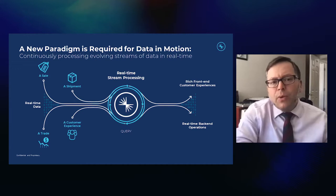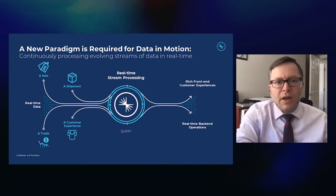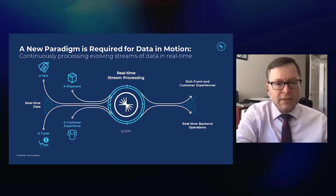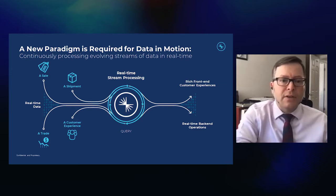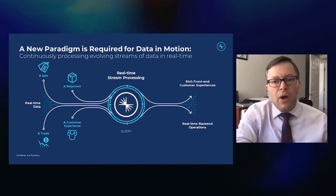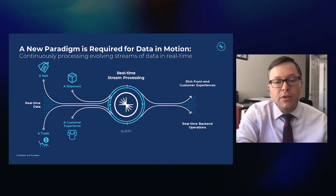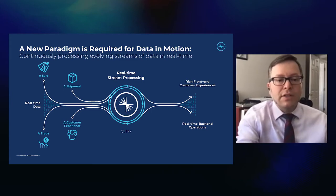It really requires a new paradigm to think about data in motion — continuously processing evolving streams of data in real time. That's really what Confluent is focused on: thinking about data in terms of things that happen — events. A sale, a trade, a customer experience, a shipment. What do those mean? How do they show up to your back-end operations? How do they show up to your customer experiences and user interfaces on the front end? So how do we stitch these things together?